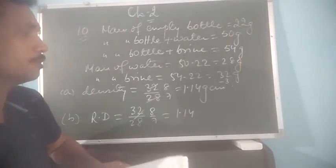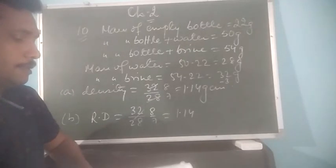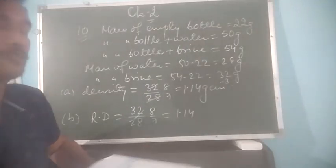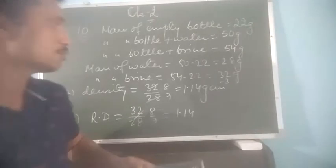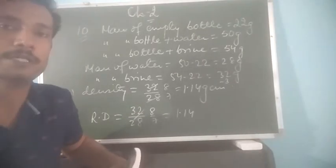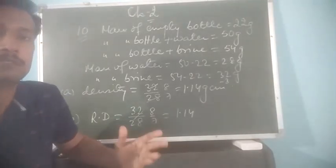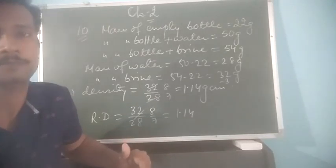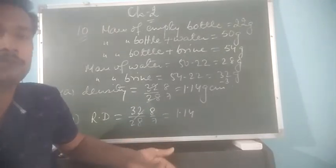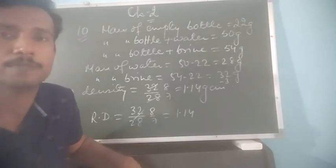I hope these two numericals are clear. There are other numericals also given in the book — you should try to solve those yourself. These are basically based on density and relative density. We will come with a new chapter in the next class. Till then, thank you.